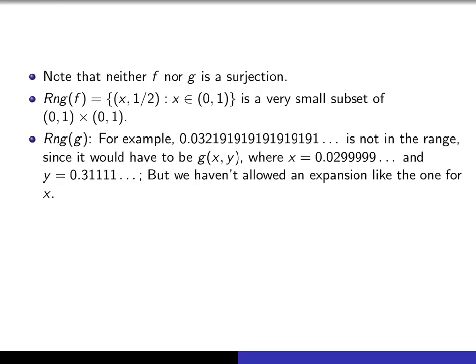So in fact, there are lots and lots of things with the property that after a while, every other digit is a 9. So there are lots of things that are not in the range of this function. So g isn't even close to being surjective either.